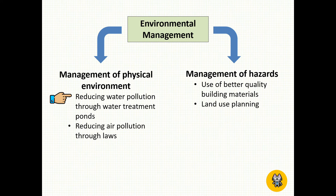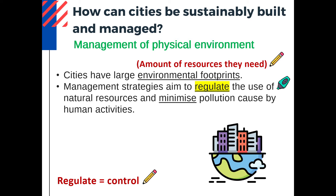So in the first strategy we'll be exploring management of physical environment — in particular, reducing water pollution through water treatment ponds. The way I want you to think about these strategies is that there is a problem happening in cities and we are trying to identify a strategy or solution to solve that problem. Cities have large environmental footprints, meaning they consume a lot of resources to function. Because they consume a lot of resources, they also produce a large amount of pollution which affects the environment. Therefore we need strategies to manage the pollution caused by human activities.